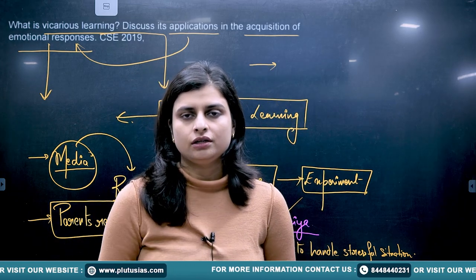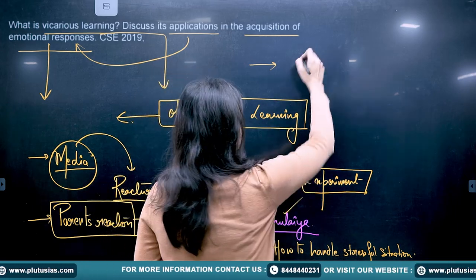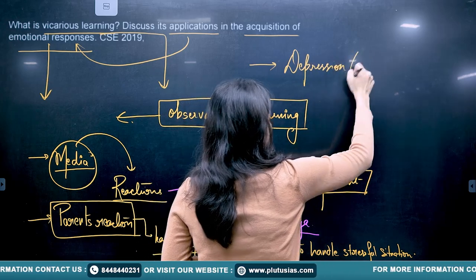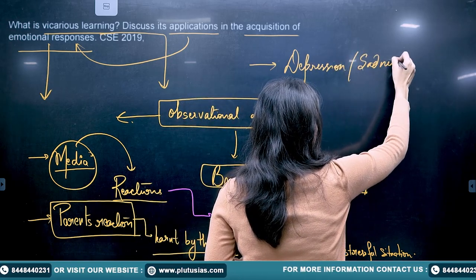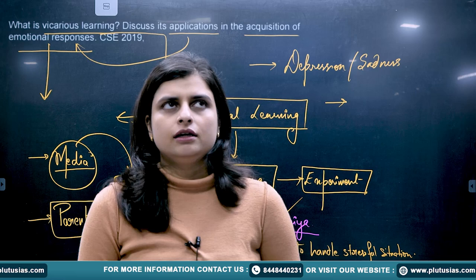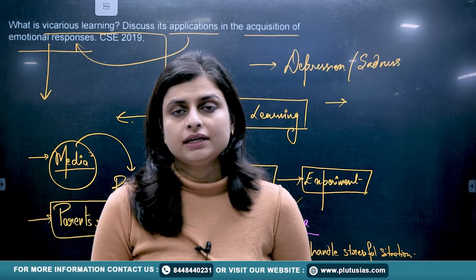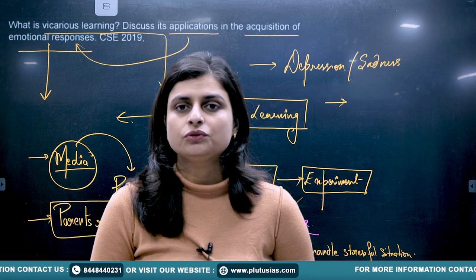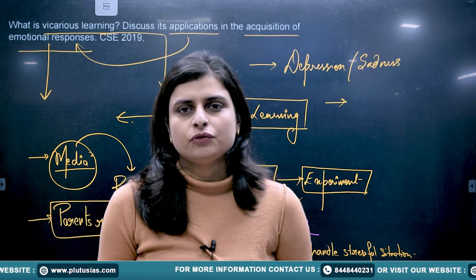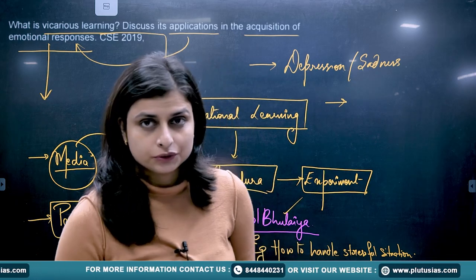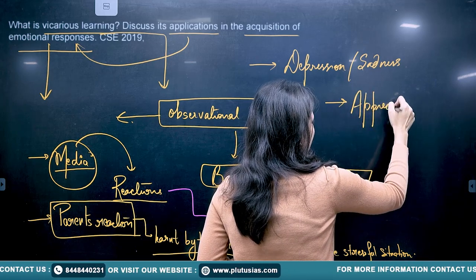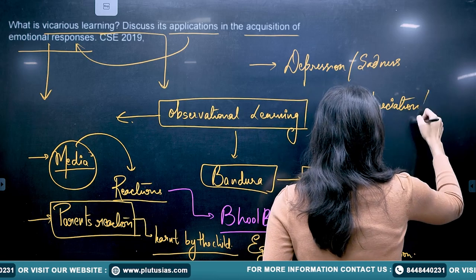When someone is in a very low phase of life, observational learning affects how they handle depression and sadness. In a family where the elder sibling is an achiever, the younger sibling learns from that example — that when you perform well, this is the kind of appreciation you get. So even the emotional response to appreciation through hard work is learned observationally.